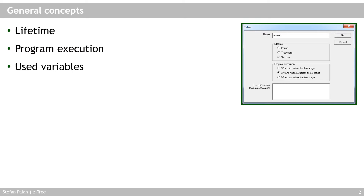The next thing we can set here is program execution — this controls when programs that run in this table are run. The default is always 'when a subject enters a stage,' and I've never had to change that. Finally, in this window you see the 'used variables' field, which you may not see unless you have a lifetime of session, because this field is only shown for session-lifetime tables.